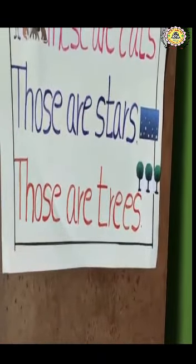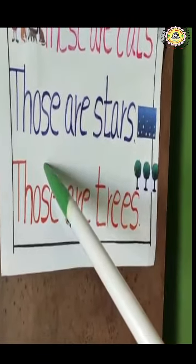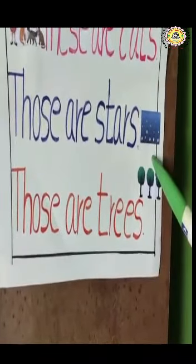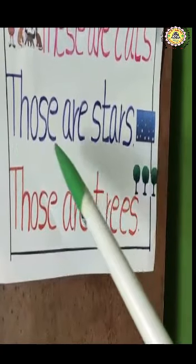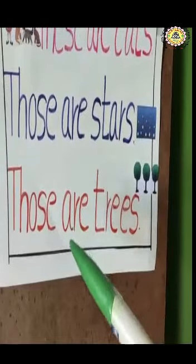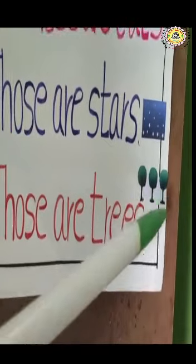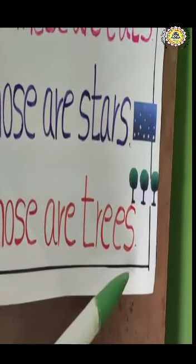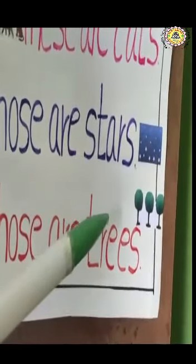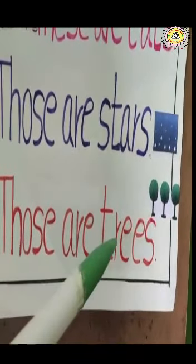Okay children, let us see some more examples using 'those'. Where do we use 'those'? Very good — if the things are far from us, then we have to use 'those'. So, what are those? Those are stars. Next example — look at those trees. One, two, three — more than one tree. So here, what do we have to use? Those. What are those? Those are trees.